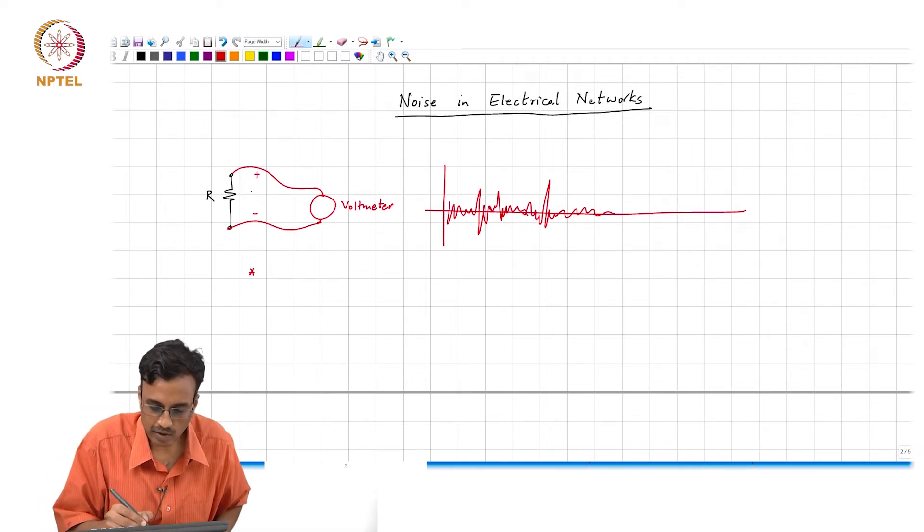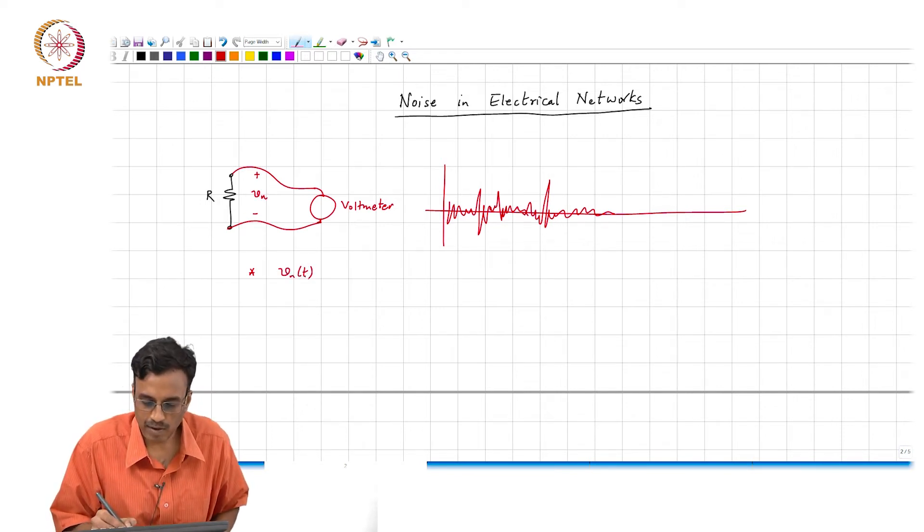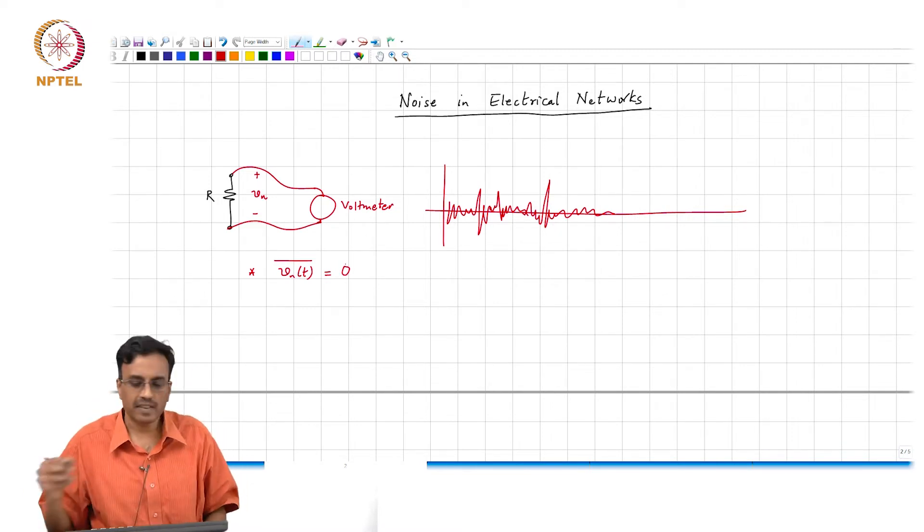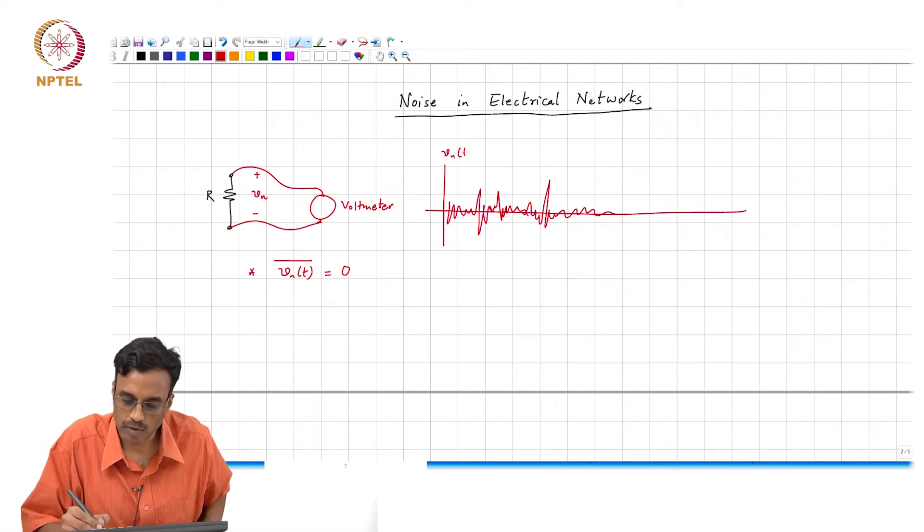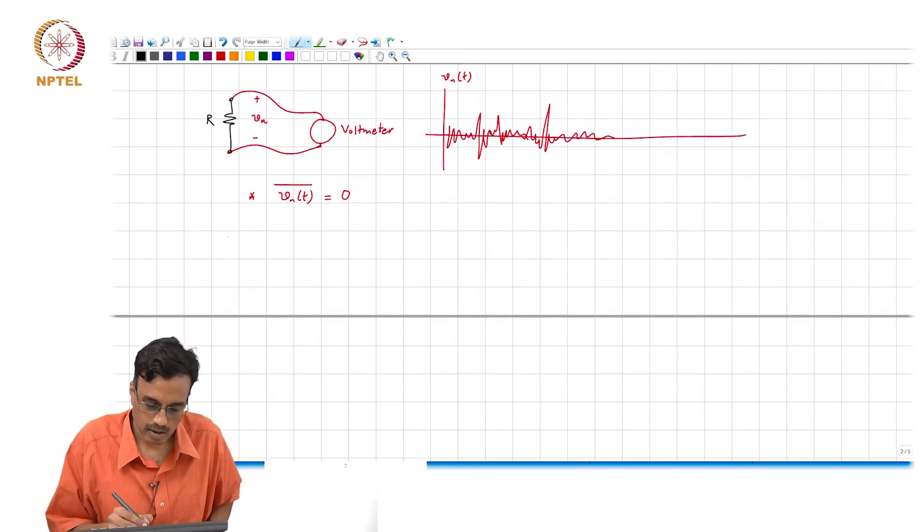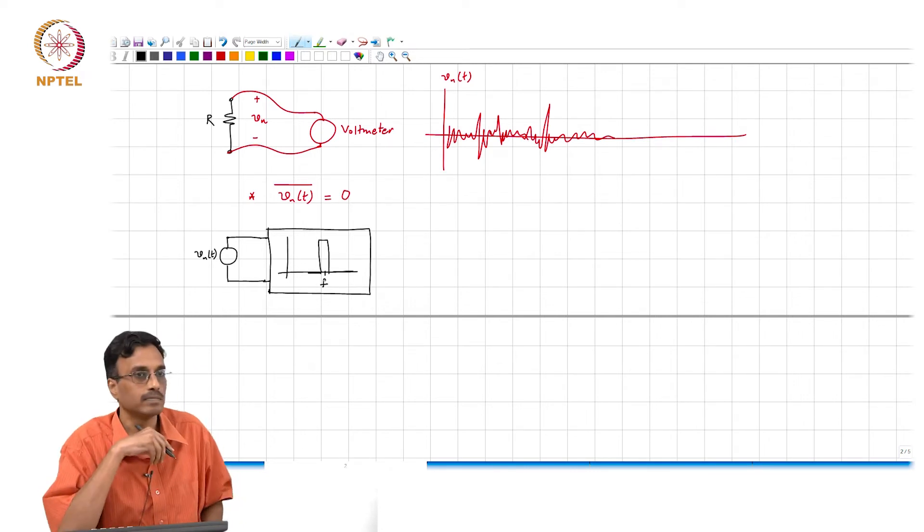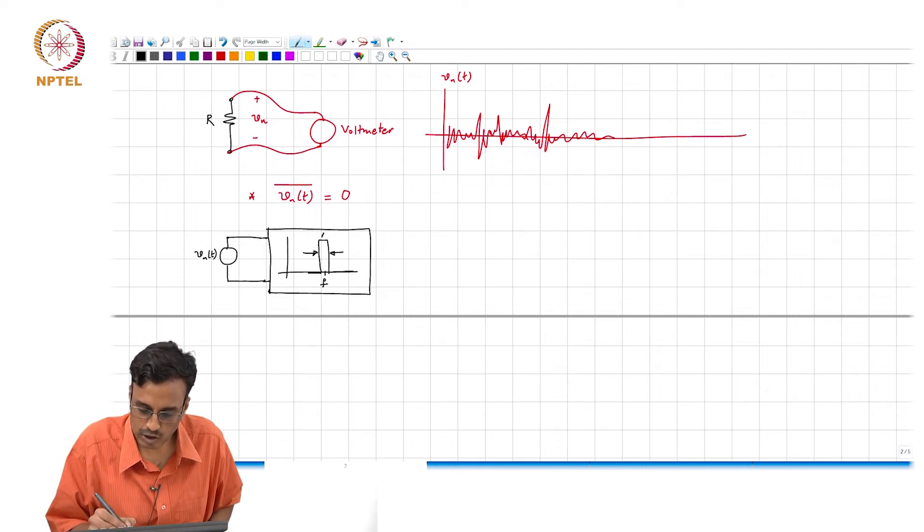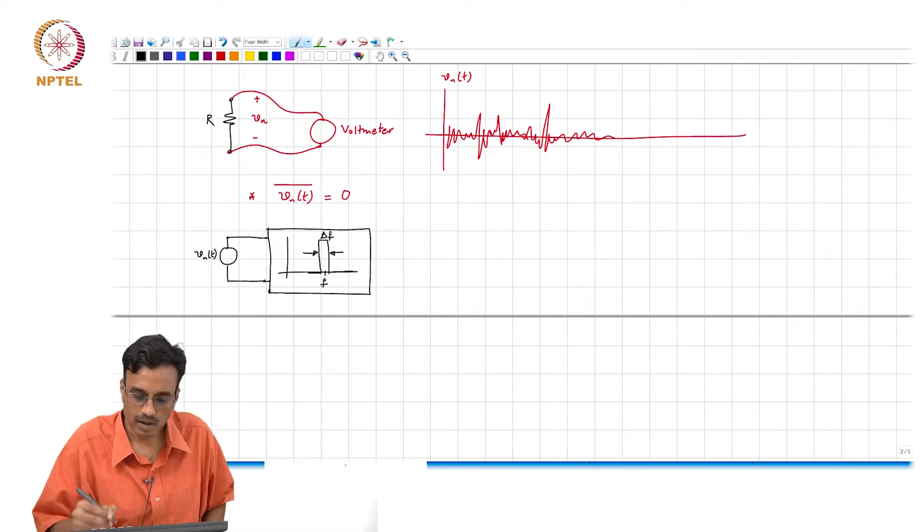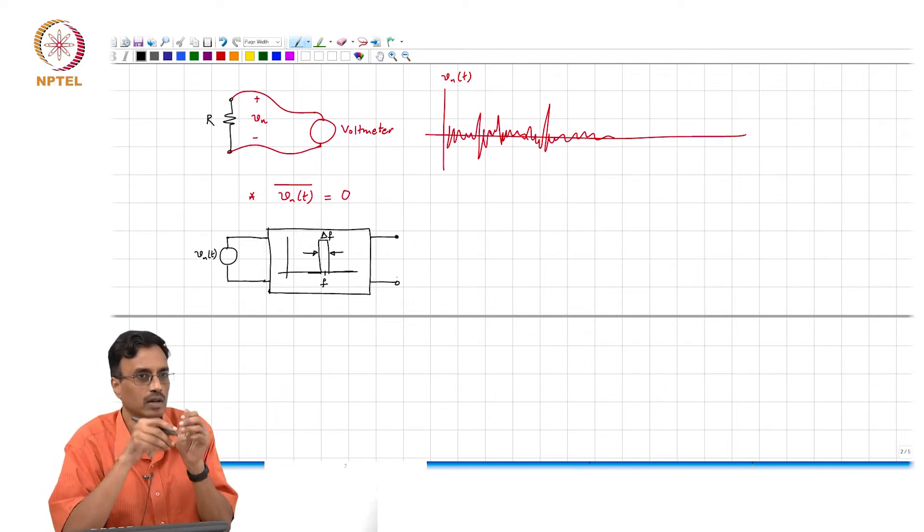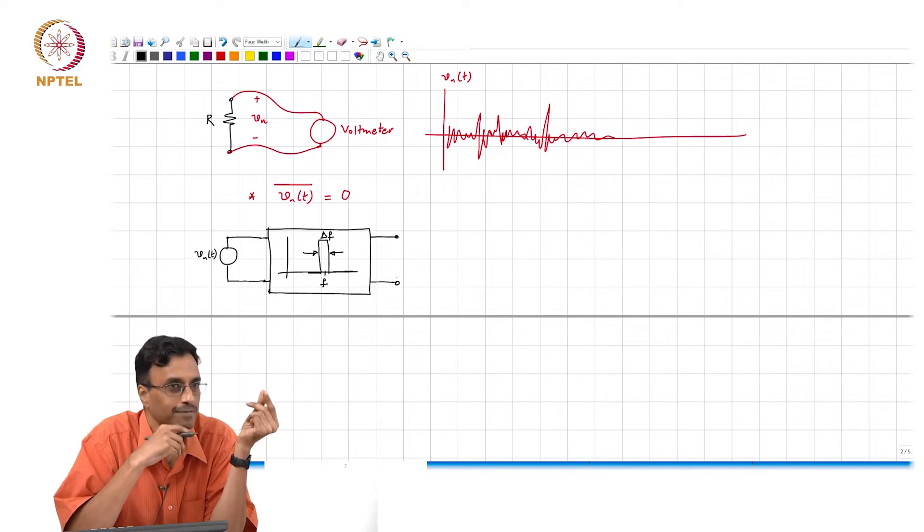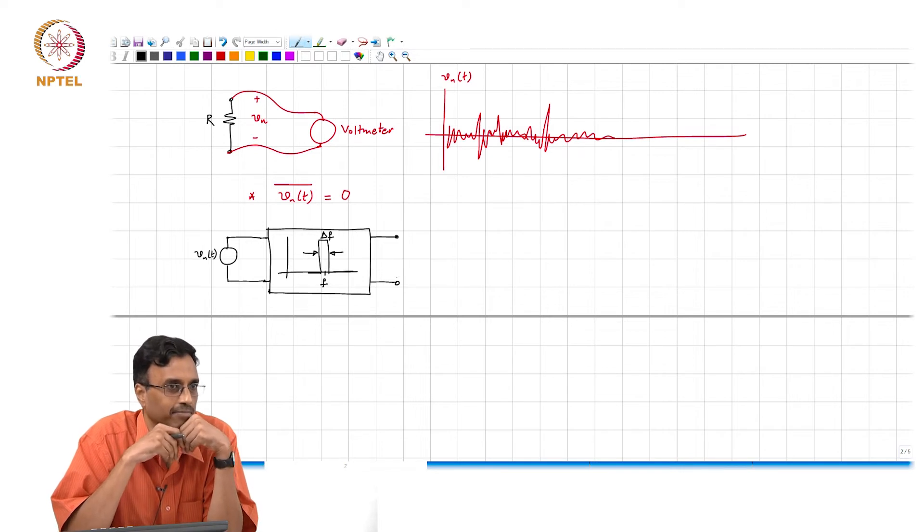So first fact of life: the voltage across the resistor v_n(t) on average is zero. The next fact of life is that if you take this v_n(t), you recorded that v_n(t), pass this through a band pass filter, an ideal brick wall band pass filter centered at a frequency f and has a bandwidth of a small bandwidth delta f.